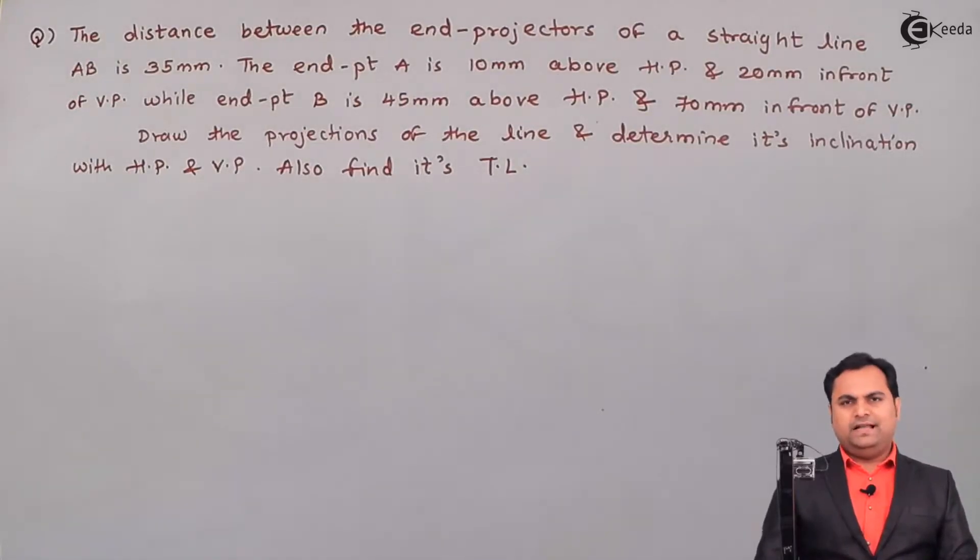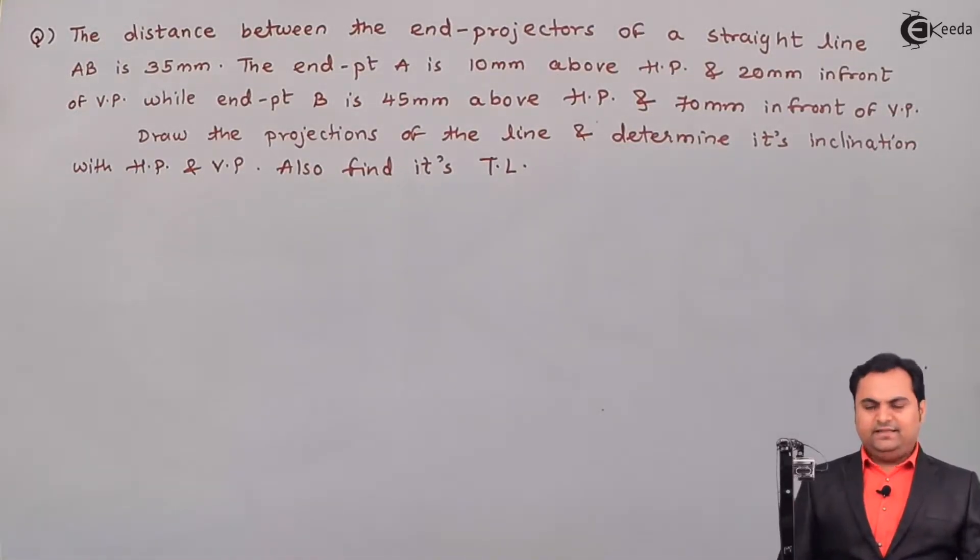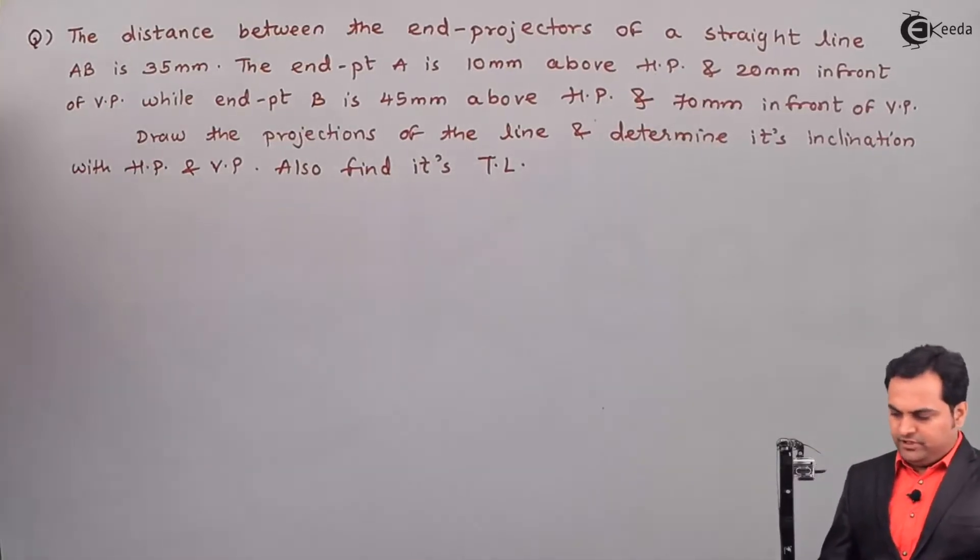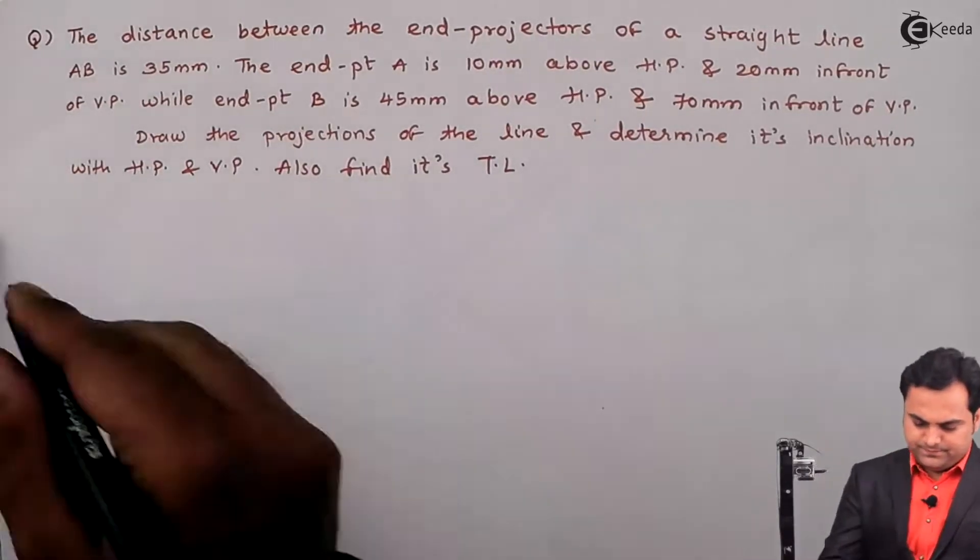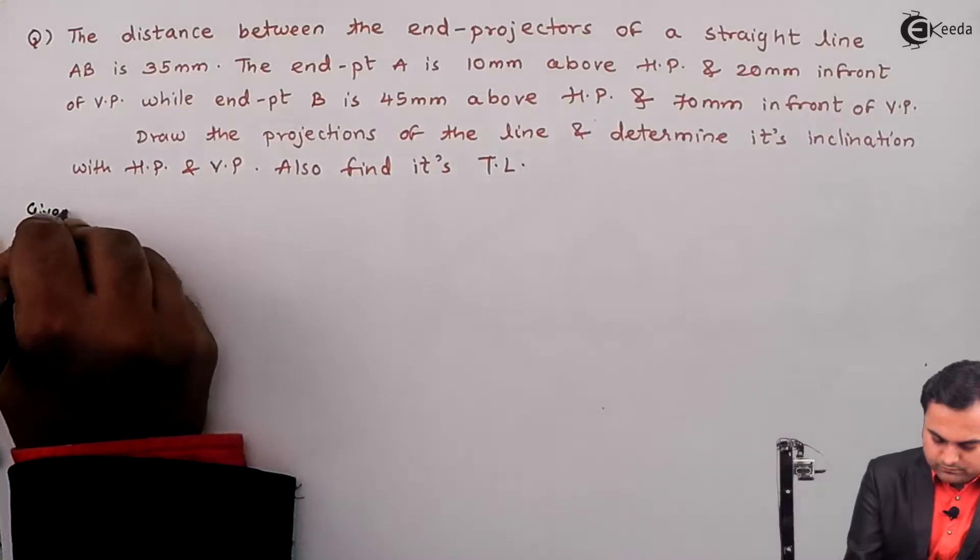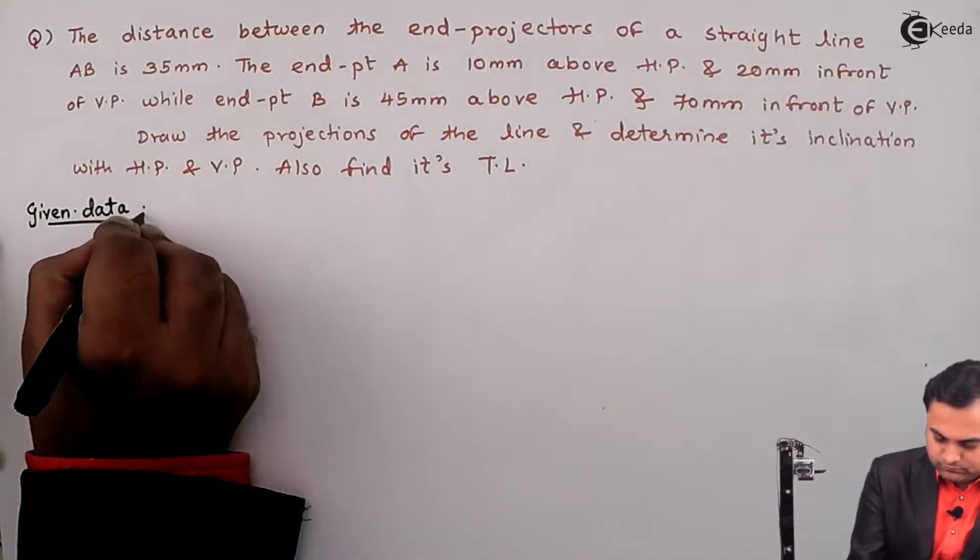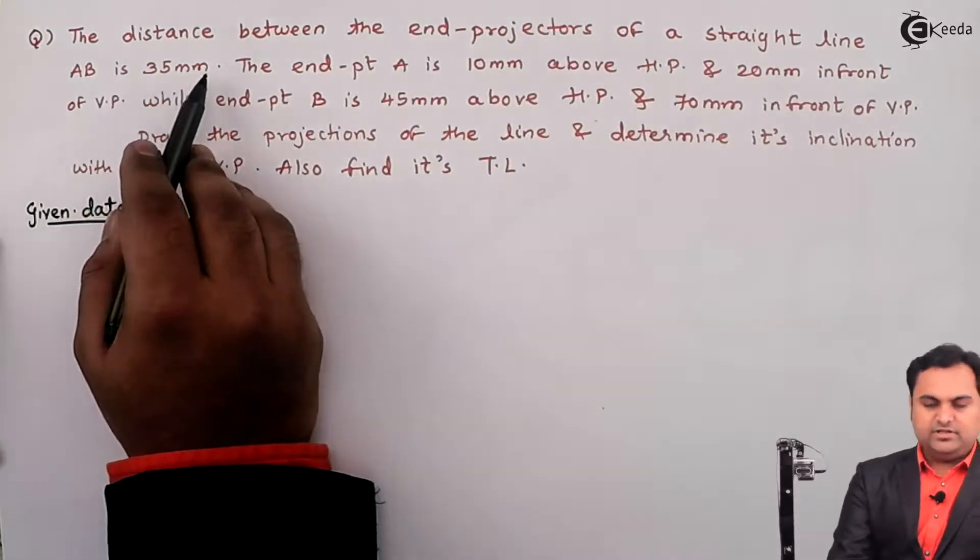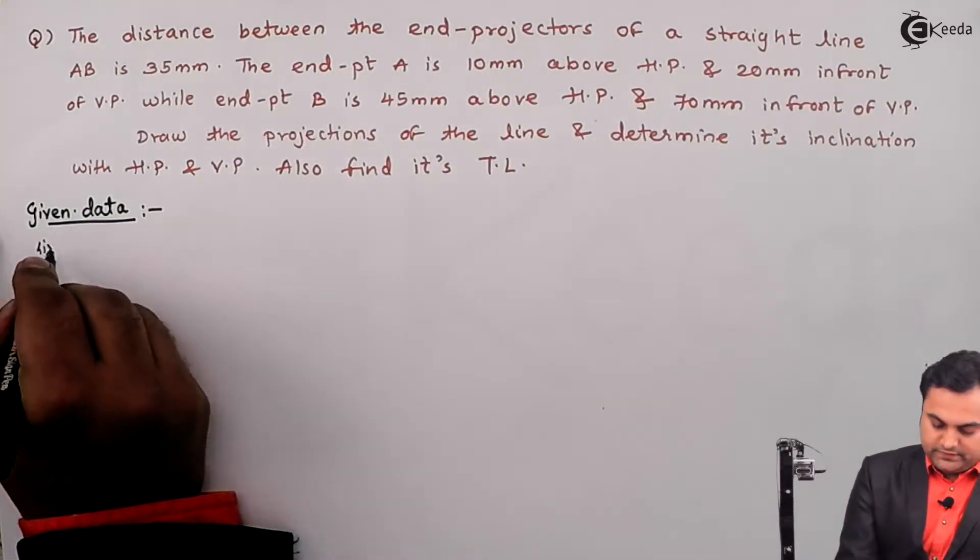Now whenever we are solving questions related to lines inclined to both the planes, we have to see that we have five parameters. So here I am going to write the data mentioning the parameters. The distance between the end projectors of a straight line AB is 35 mm.